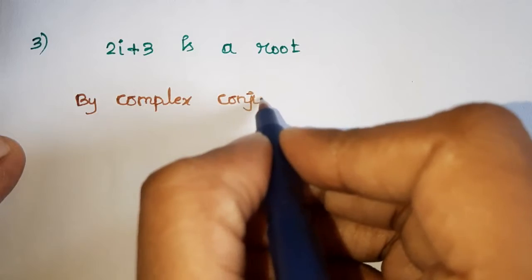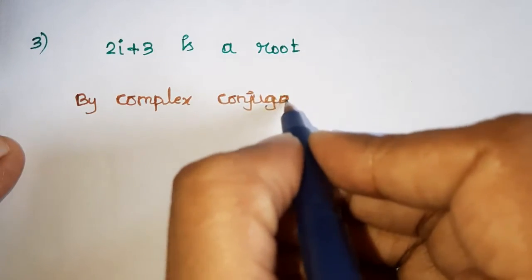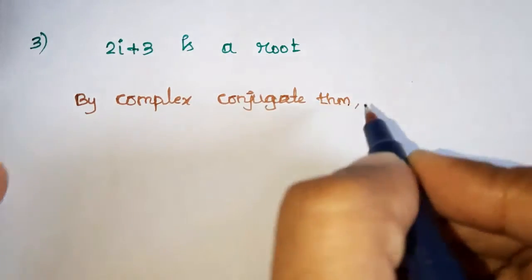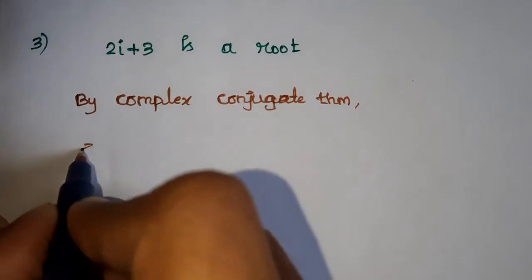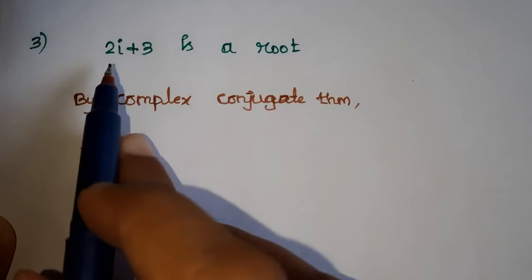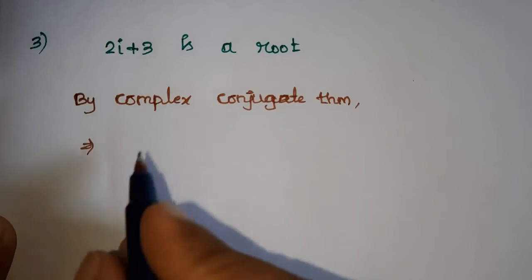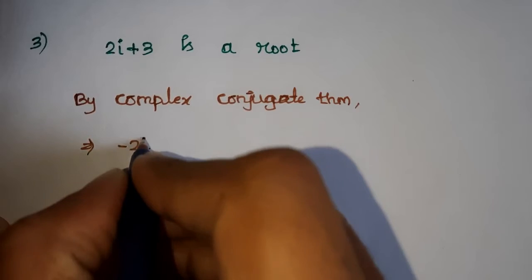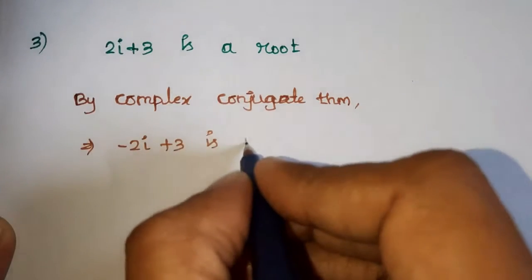If one complex number is a root, its conjugate is also a root. The conjugate is imaginary, so minus 2i plus 3 is also a root.